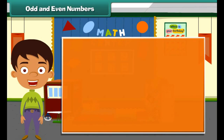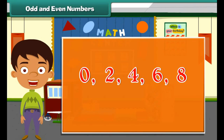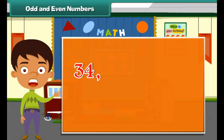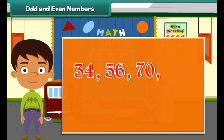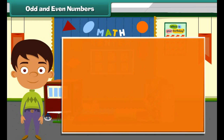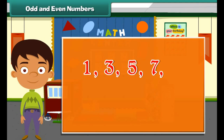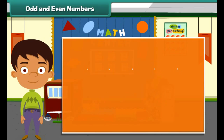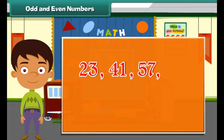Any number that has a 0, 2, 4, 6, or 8 in the ones place is called an even number. For example, 34, 56, 70, and 102 are all even numbers. Any number that has 1, 3, 5, 7, or 9 in the ones place is called an odd number. For example, 23, 41, 57, and 89 are all odd numbers.